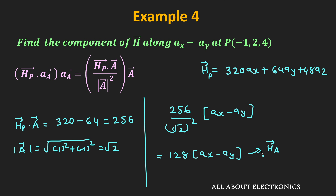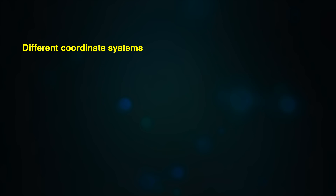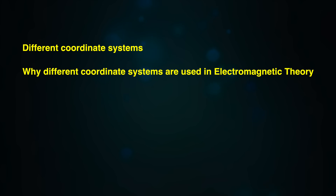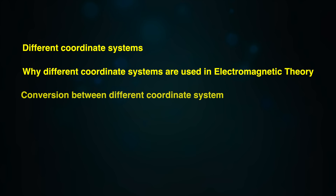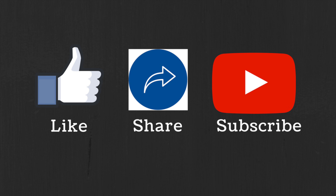In this way we can solve examples based on the dot product and the cross product. In the next video, we will look at different coordinate systems used in electromagnetic fields, why they are required, and how to convert equations from one coordinate system to another. If you have any questions, leave them in the comments below, like the video, and subscribe for more.